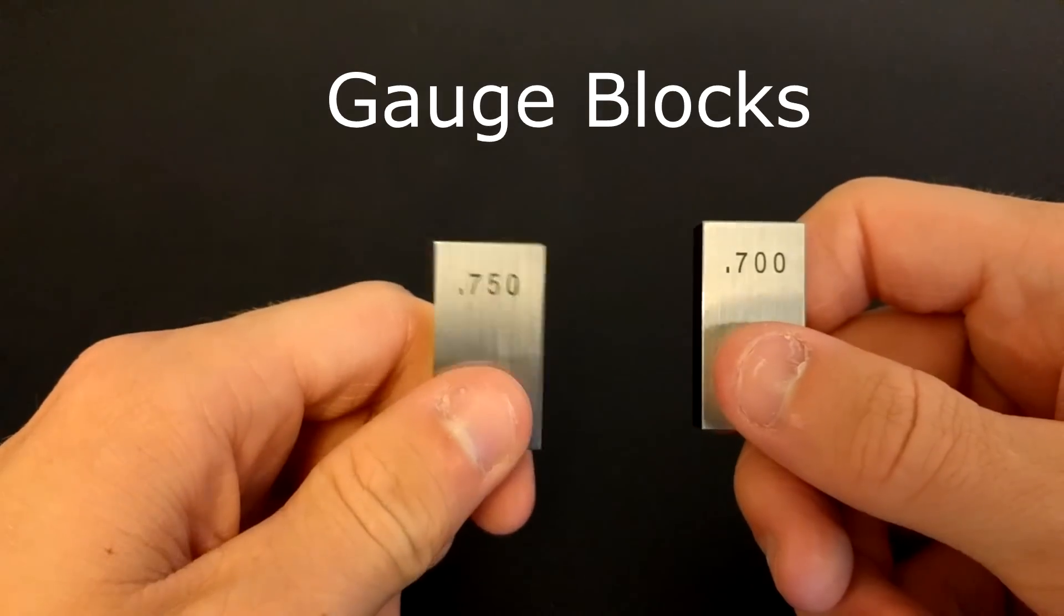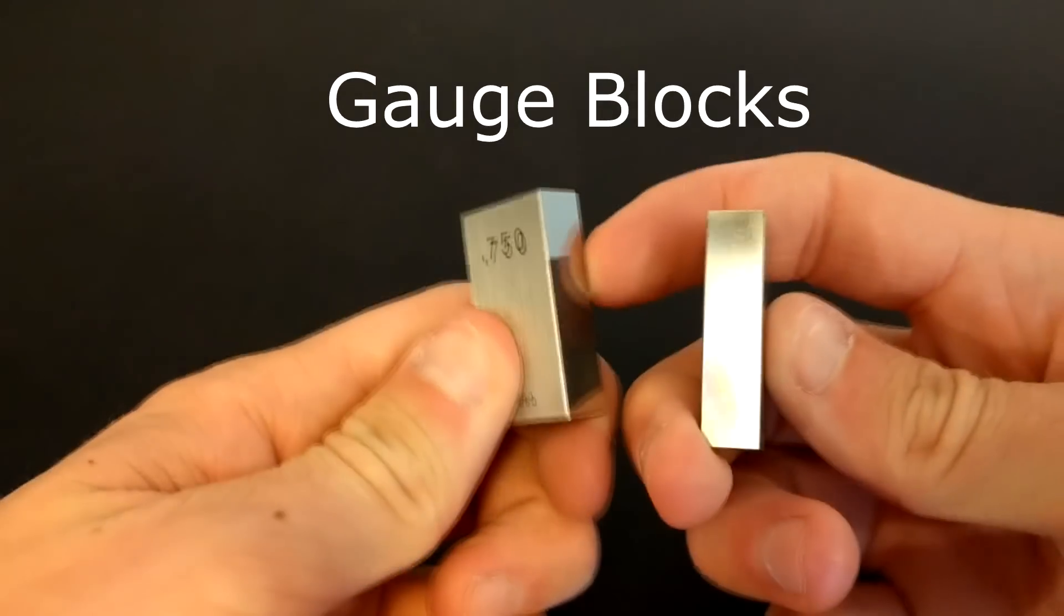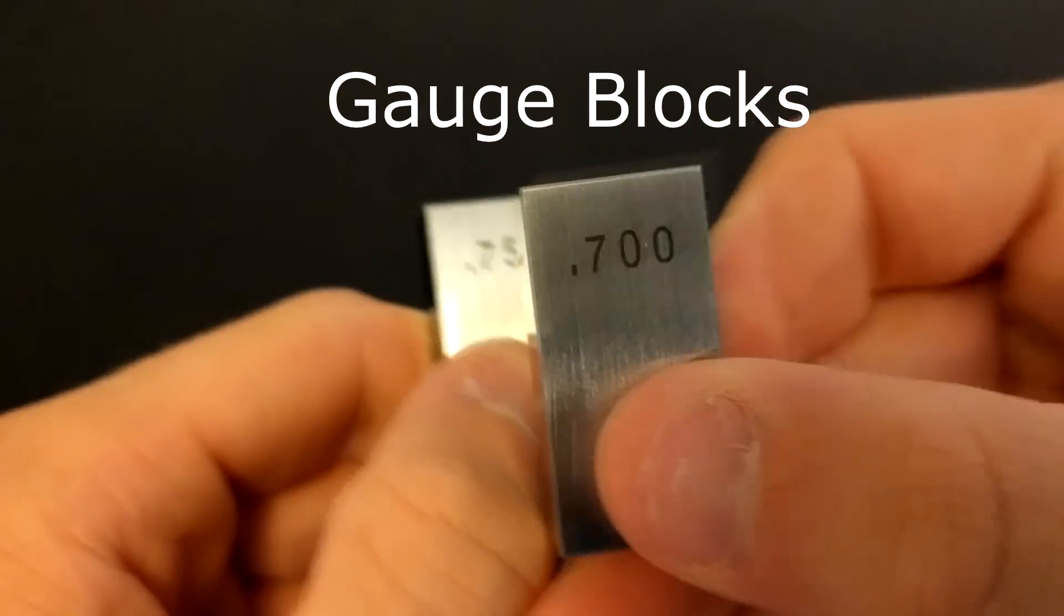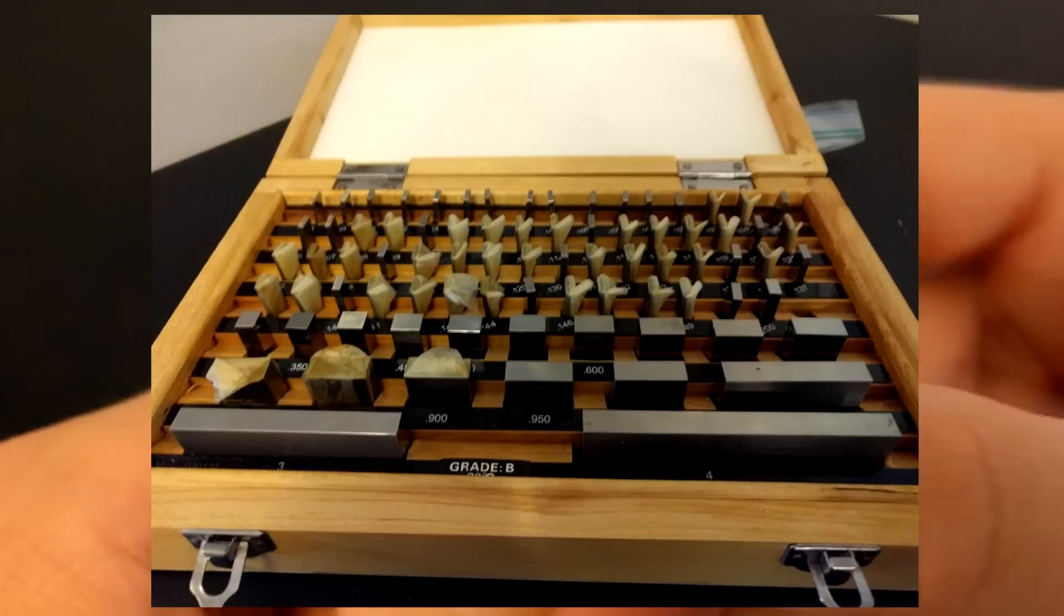Well, these are actually gauge blocks, which are blocks of smooth metal that are precisely manufactured to be certain lengths so machinists can calibrate their machines and measurement tools.